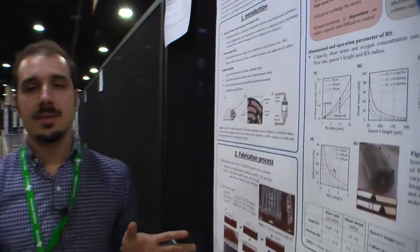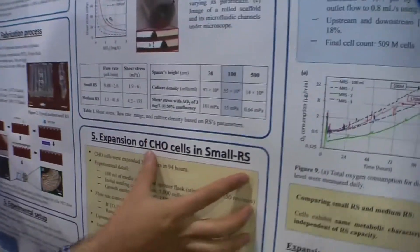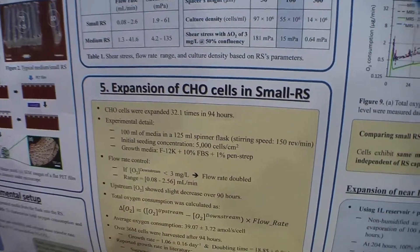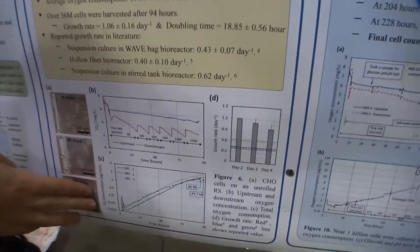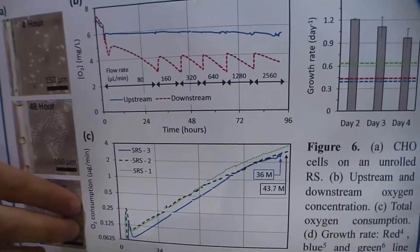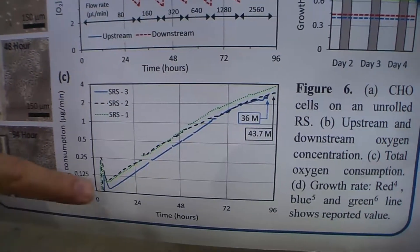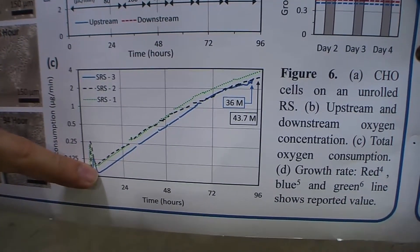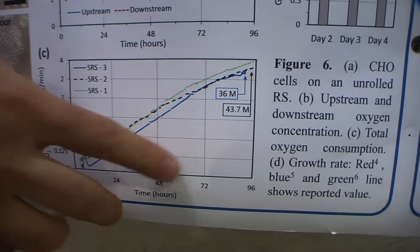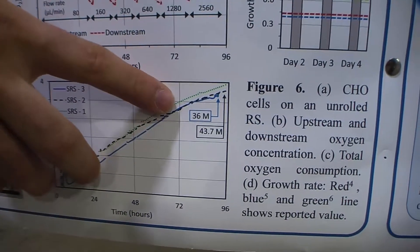After characterizing the Roll the Scaffold, we tested different cell types. We first started with CHO cells. If you look at this graph, it shows the oxygen consumption rate of the cells inside the Roll the Scaffold. In the beginning, we put in one million cells, and over four days, they grew to 40 million cells.